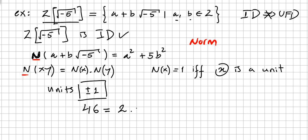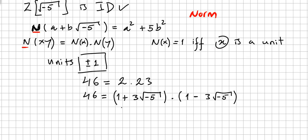But there is also another factorization of 46 in this ring. You can check this — just do the math. So we have 46 factored two different ways, and all four of these factors are in the ring. Now we are going to show that all these factors are irreducible over the ring.